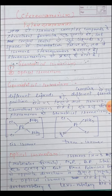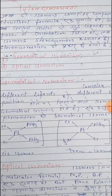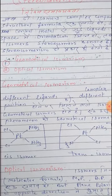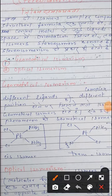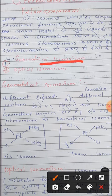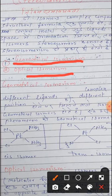...such isomers are called stereoisomers. Children, stereoisomers can be further divided into two categories: first, geometrical isomers, called 'jyamitiya samavayata', and second, optical isomers, called 'prakashik samavayata'.